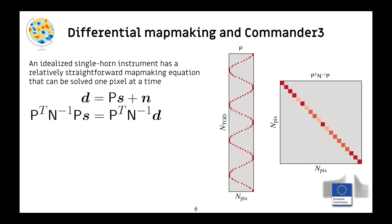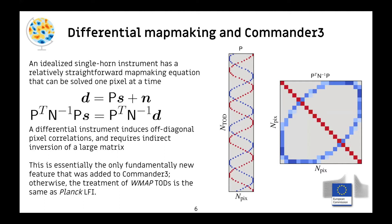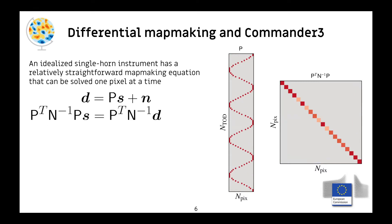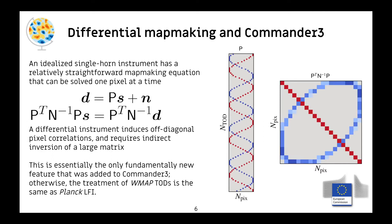One thing we needed to address when analyzing Commander3 with Planck data is that map-making is a little bit different. For a classic single-horn instrument, you have a data model and can use it to create the maximum-likelihood solution for the sky map from the time-ordered data. For differential data, it's basically the same except you have two horns — you're looking at data A minus data B — and the matrix is non-diagonal. Whereas in the single-horn case you can solve for the map pixel by pixel independently, in the differential horn case you need to do a full matrix inversion. We developed a conjugate gradient solver to solve for the map-making in WMAP.